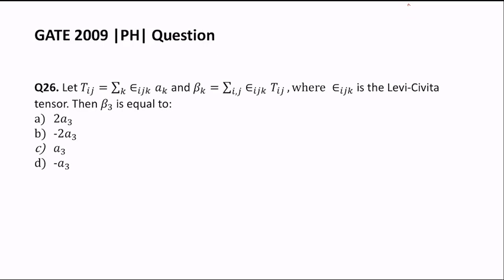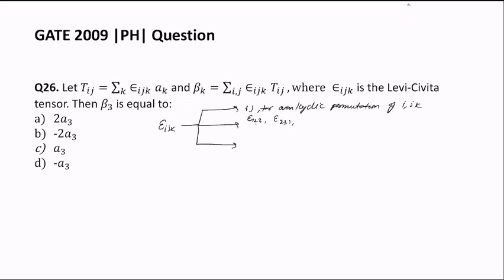First, ε_ijk is the Levi-Civita tensor, which is a rank-3 tensor. It equals +1 for even or cyclic permutations of ijk — for example ε_123, ε_231, ε_312 all equal +1. It equals zero whenever any index is repeated more than once — for example ε_221 or ε_112 are all zero.